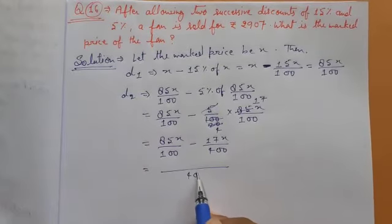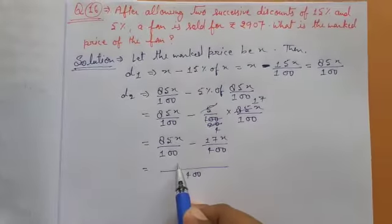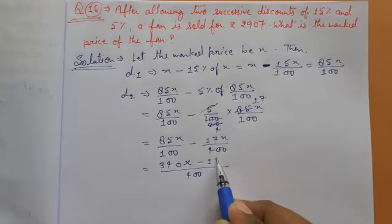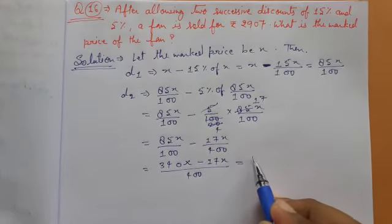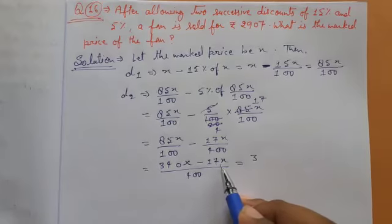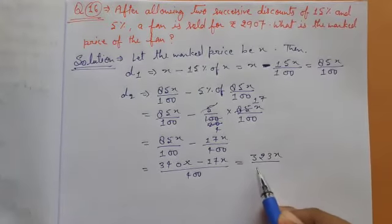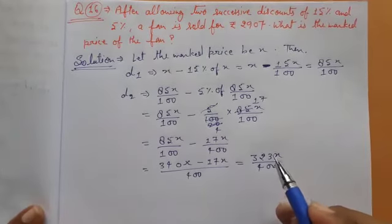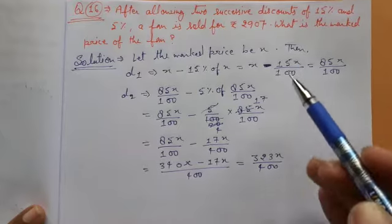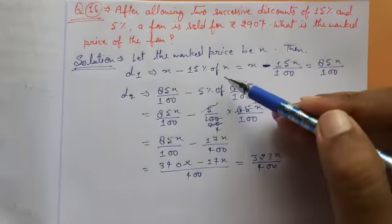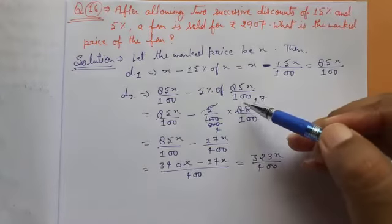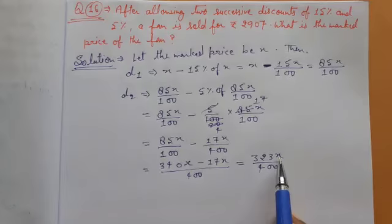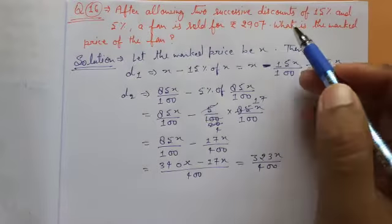By solving this with denominator 400, we get 340X minus 17X, which is equivalent to 323X upon 400. So after the second discount, it will be 323X upon 400, and this must be equivalent to 2,907.